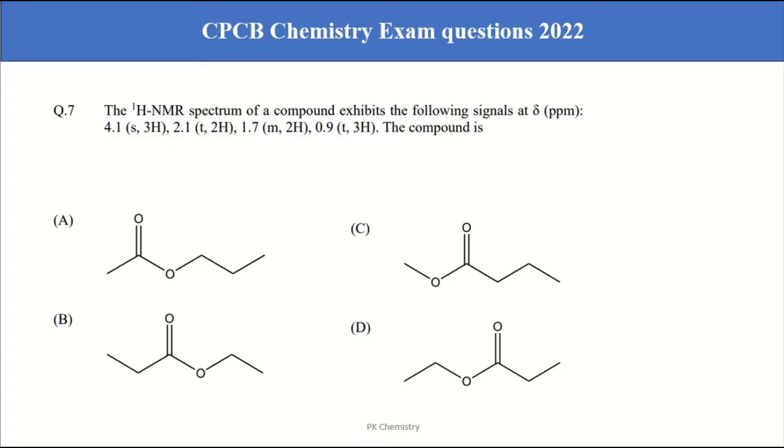Next question. So in the given NMR exhibit the following singlet at del value. So the singlet at 4.1 and 3.3 hydrogen. 3 hydrogen singlet here. Here 3 hydrogen singlet but here no 3 hydrogen singlet.